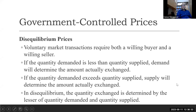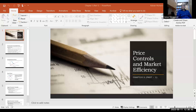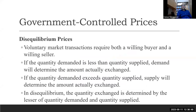Voluntary market transactions require both a willing buyer and a willing seller, exchanging without any enforced restrictions. If quantity demanded is less than quantity supplied, demand will determine the amount actually exchanged. If quantity demanded exceeds quantity supplied, supply will determine the amount exchanged. So whichever is less determines the actual quantity exchanged.